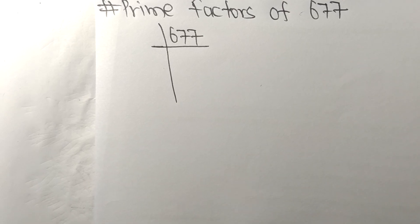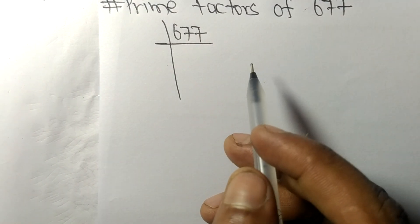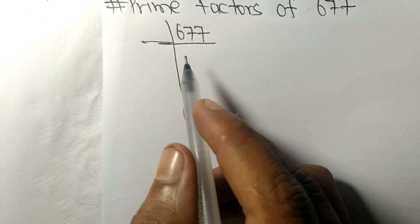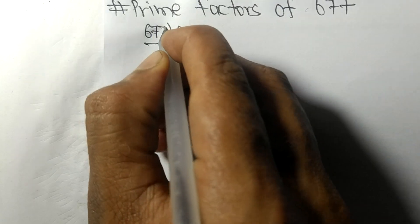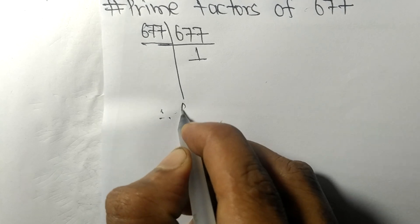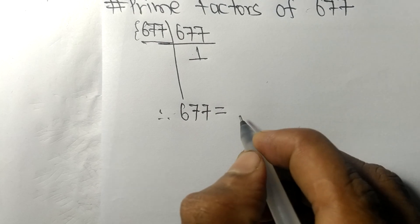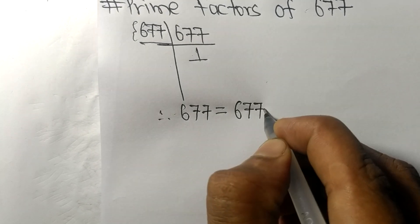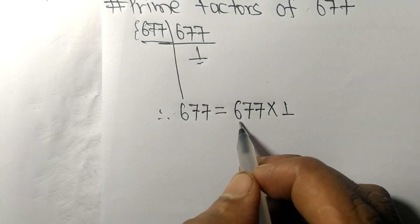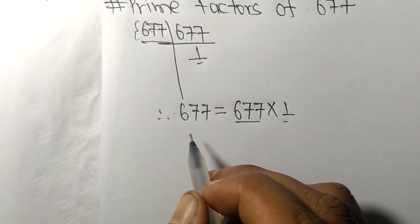Today we shall learn to find the prime factors of 677. Since 677 is a prime number, it is divisible by 677 only, and we get 1. Therefore, 677 equals 677 times 1, so 677 and 1 are the prime factors of 677.